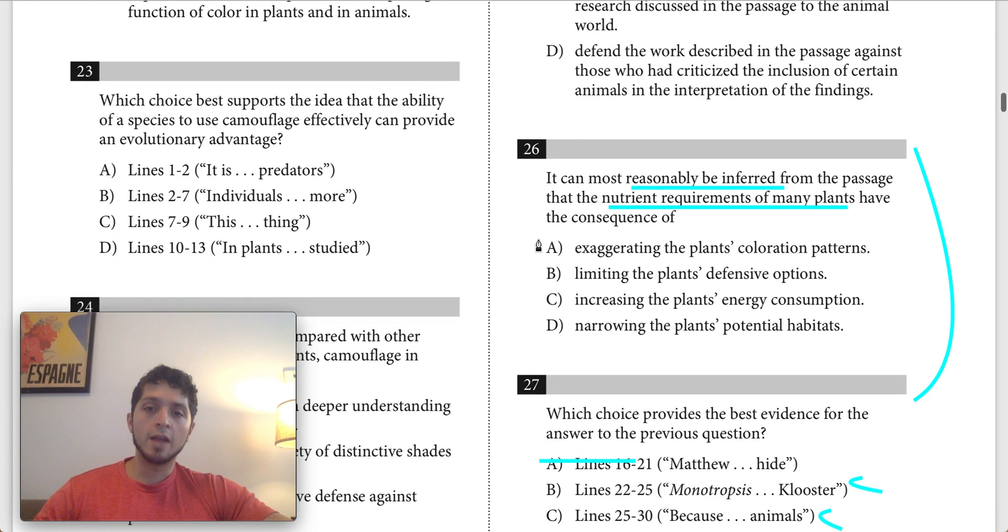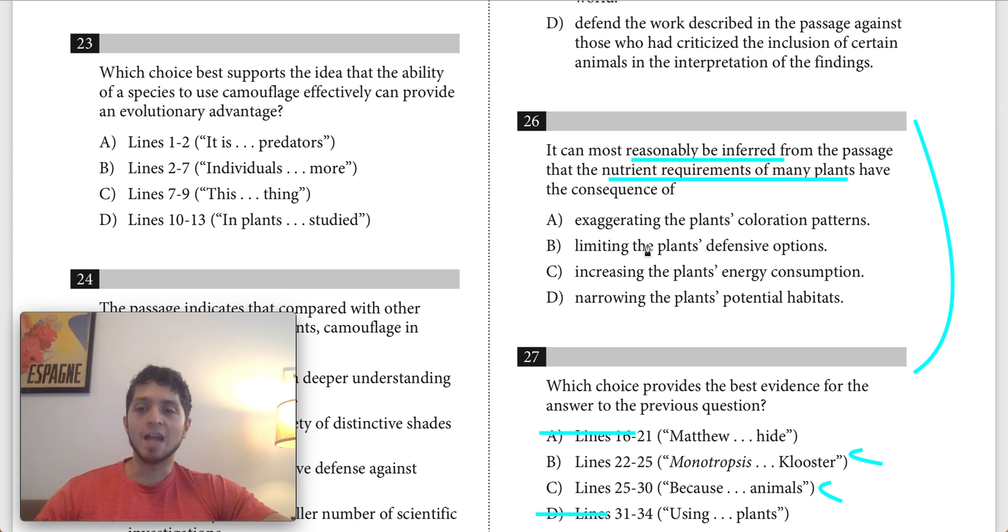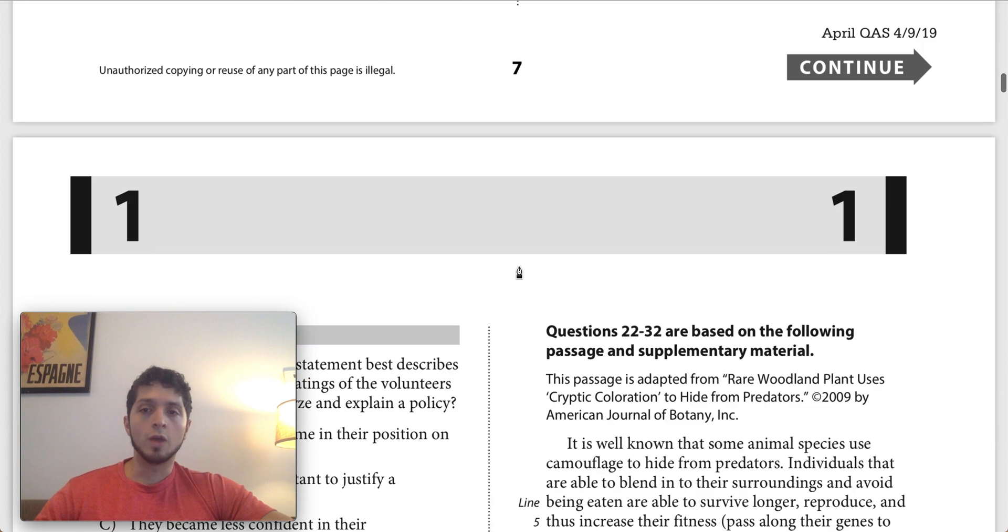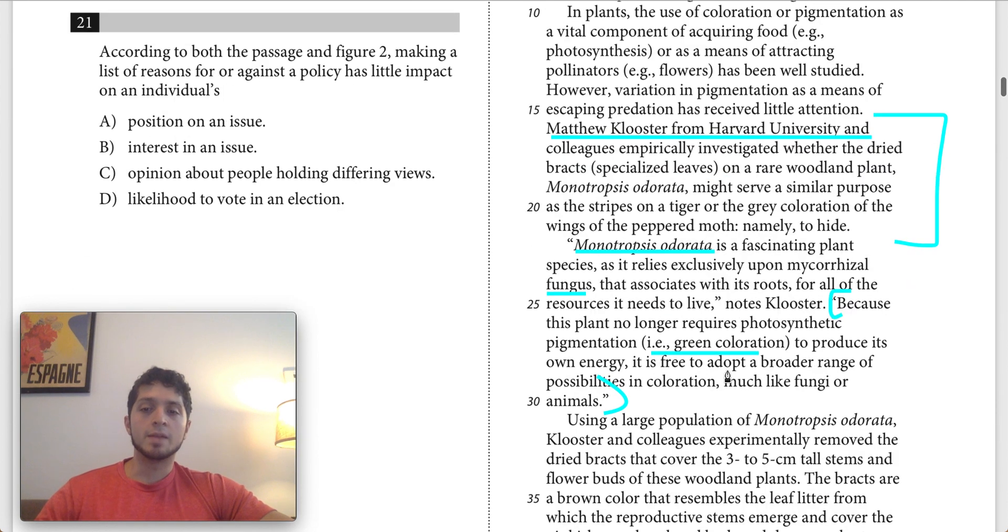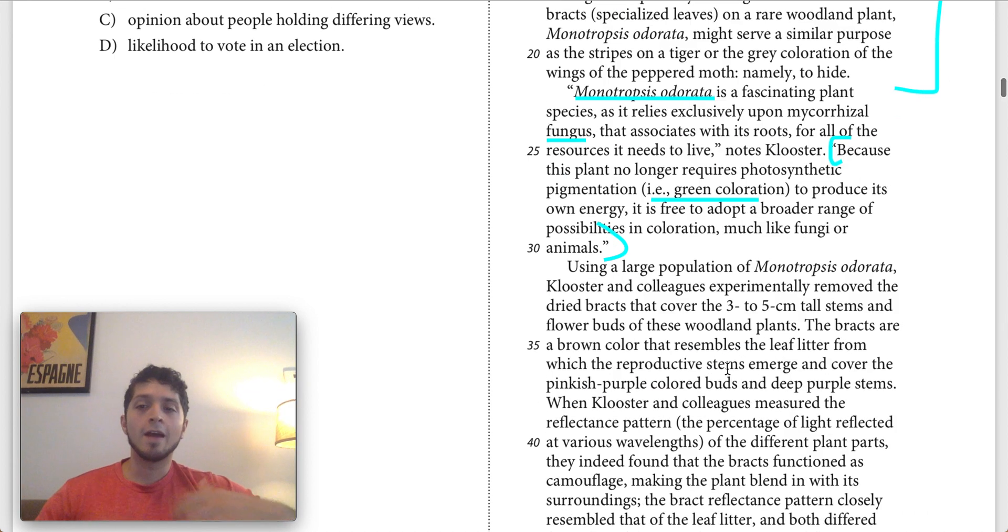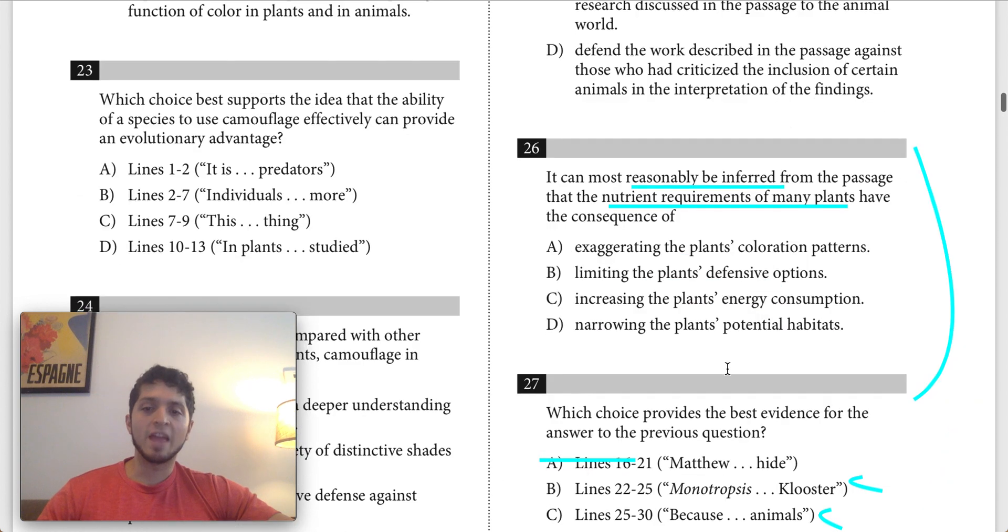Let's see if we have an answer choice that will match that. For A, question 26 says the consequence is that it exaggerates the plant's coloration patterns. So this is saying that these plants that need photosynthesis, their plant coloration patterns are exaggerated. I don't think that really matches what was told here, which is that basically the possibilities of their coloration, that range is narrowed, not that they have more exaggerated patterns. So narrowing of the range of possibilities is not the same as exaggerating their patterns.